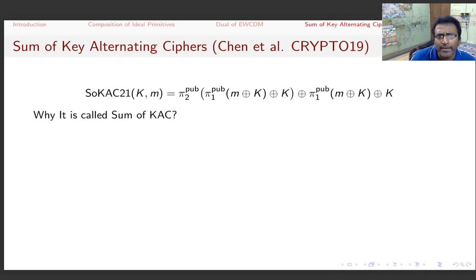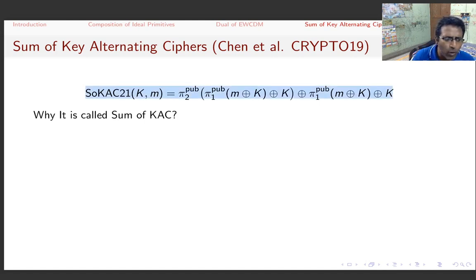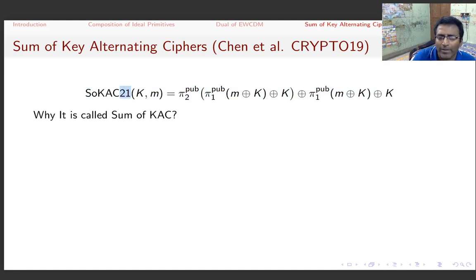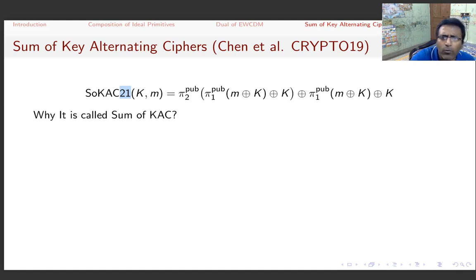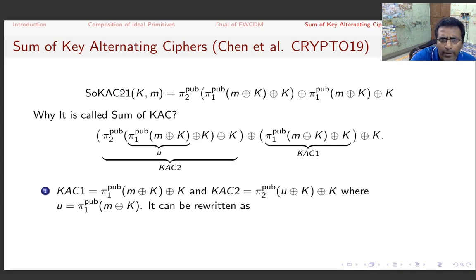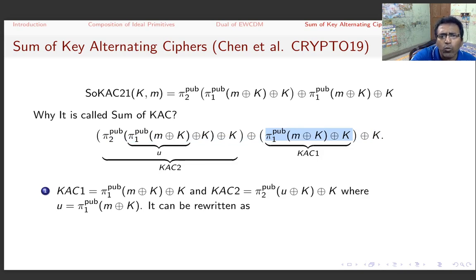This attack applies to SoKC21, proposed by Chen et al. at CRYPTO 2019. SoKC21 is a pseudorandom function construction using public primitives: two public permutations π₁ and π₂ and one key. The specific variant SoKC-2-1 uses two public primitives and one key; there are different variants depending on how many keys and public permutations are used.